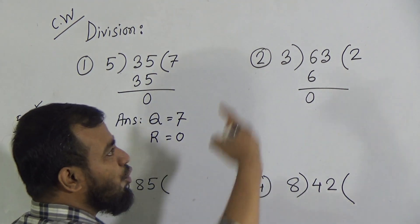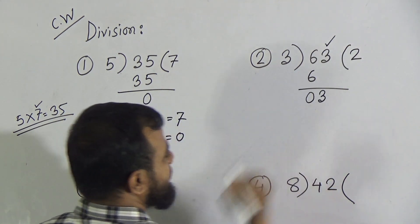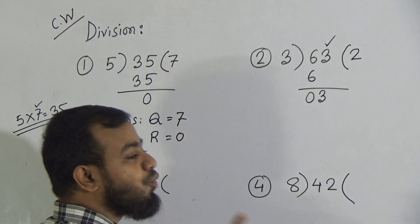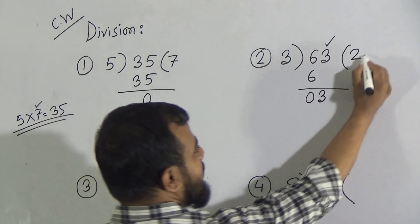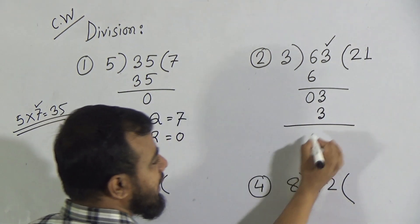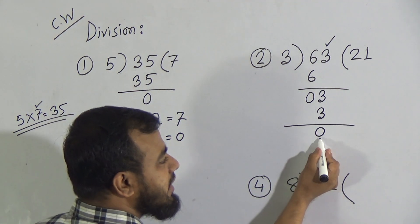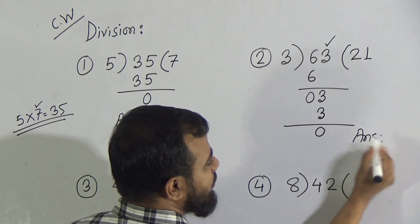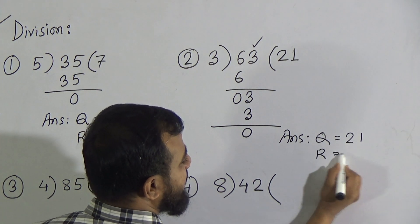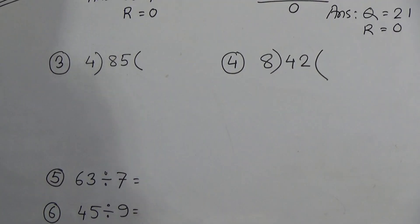After subtracting, bring down the next digit — 3. Now count the times table of 3 to get 3: 3 ones are 3. Write down 3 ones are 3, then subtract 3 from 3 to get 0. Our quotient is 21 and our remainder is 0. Write down the answer: Q = 21, R = 0.